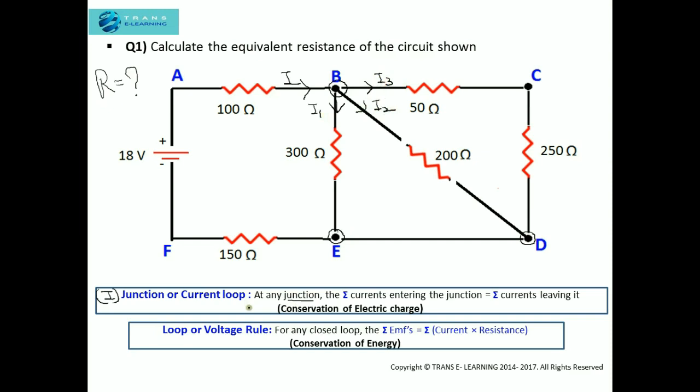So this rule states that at any junction, the algebraic sum of currents entering the junction is equal to the algebraic sum of currents leaving it.